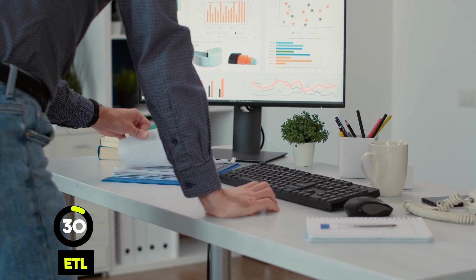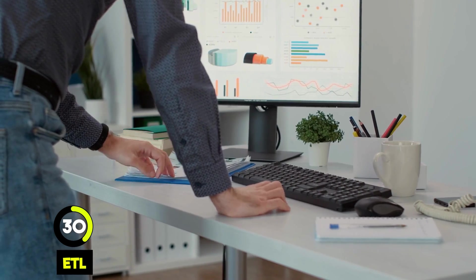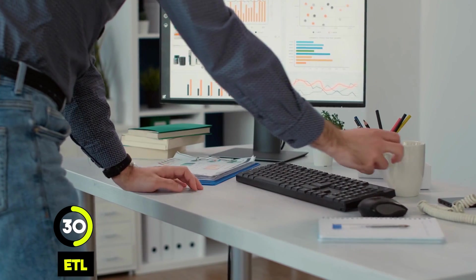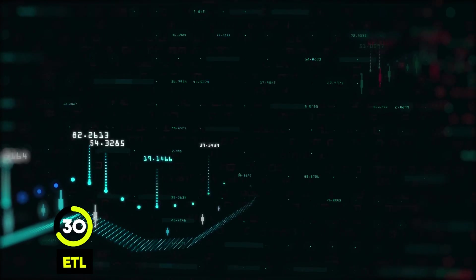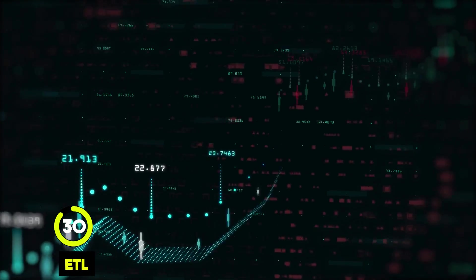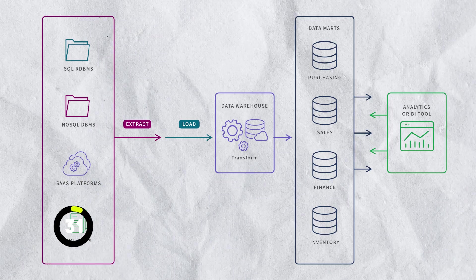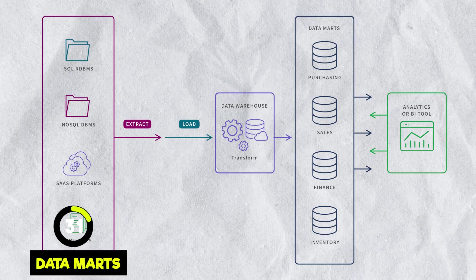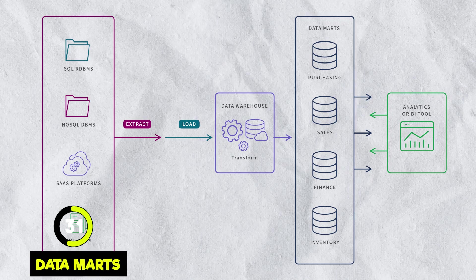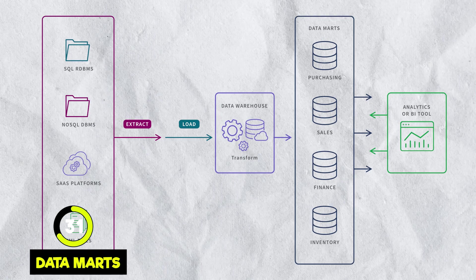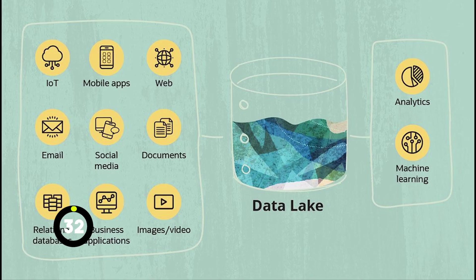ETL stands for Extract, Transform, and Load, and is a way to move data from multiple sources and store it into one place where we can use it. It's a must-know term for data engineers, but still really good to know as a data analyst. Data marts are smaller subsets of a data warehouse — a specific department in a company might only need to see and access the section of data that's relevant to them.